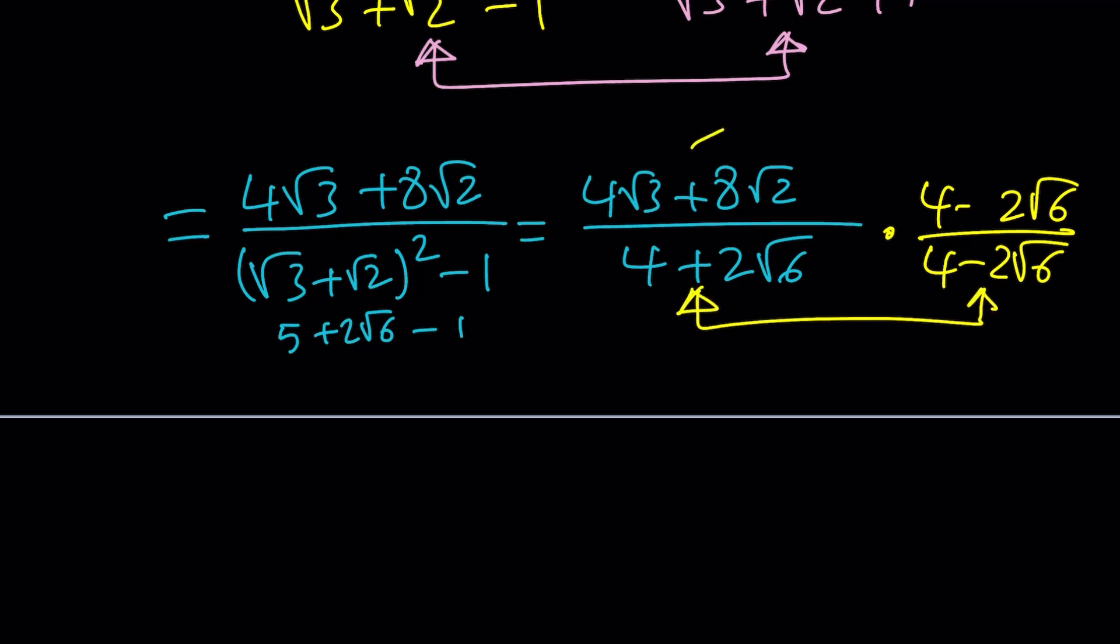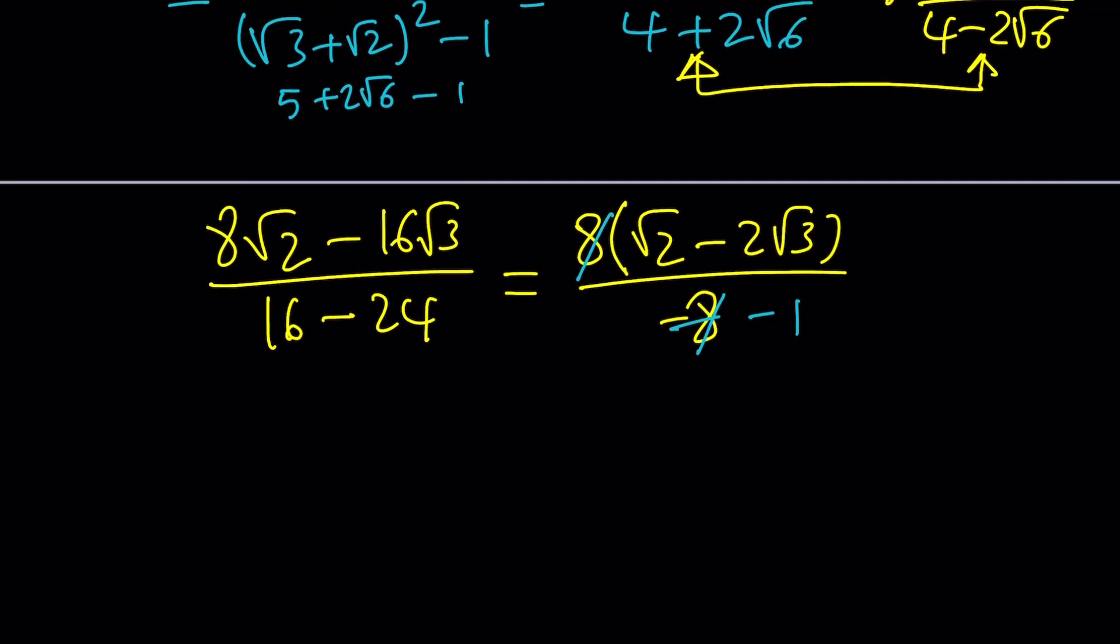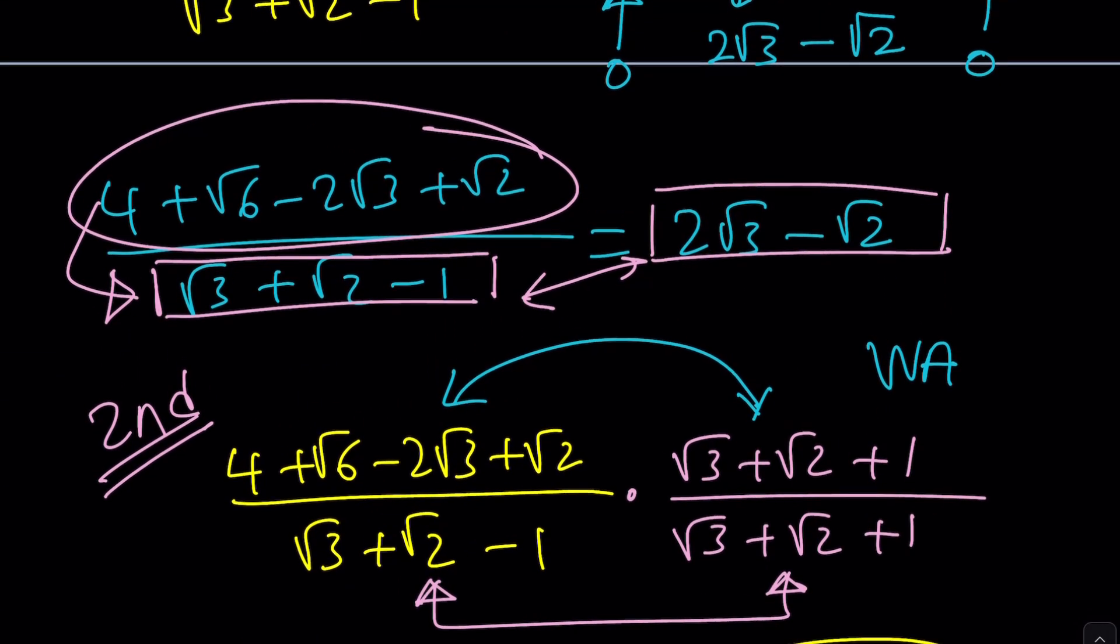When you distribute, again, I did the work for you, I mean, Wolfram Alpha. You get 8√2 - 16√3. And at the bottom, you get 16 - 24, which is (2√6)². And that's a -8. So, you can kind of take out an 8. Divided by -8, you end up with a -1 when you cancel it out. And so, it will negate the numerator, and it will give you 2√3 - √2, which is what we had with the first method. Of course, they should be the same, otherwise we made a mistake.